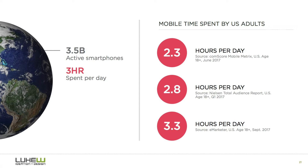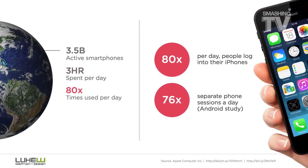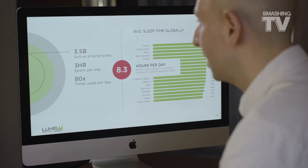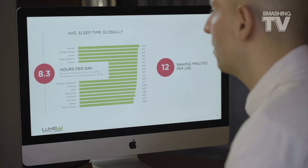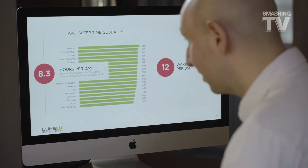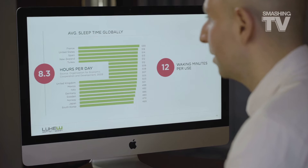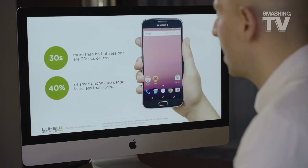That's a lot of time looking at a screen. At the same time, approximately 80 times a day we take the phone from our pocket, glance at it for a short amount of time, and put it back. We do that 80 times a day — that should freak us out just a little bit. If you sleep around 8 hours a day, that means essentially every 12 minutes of our waking existence we're looking at the screen. This is how important mobile actually is.